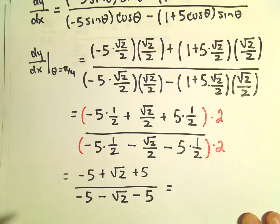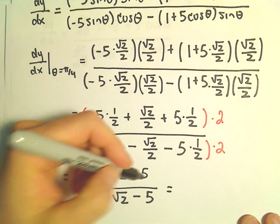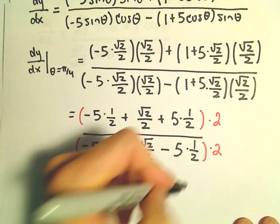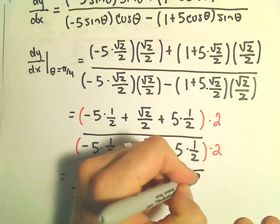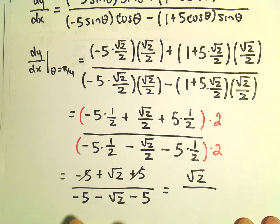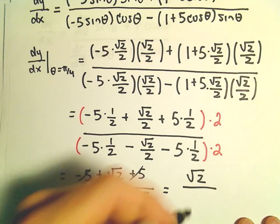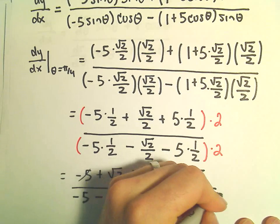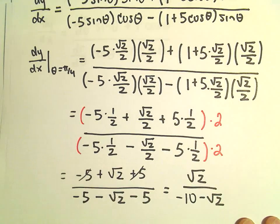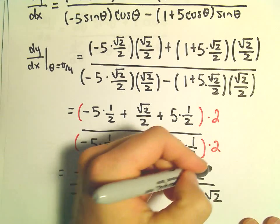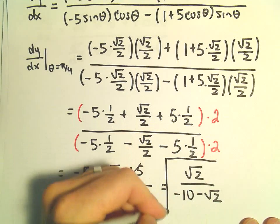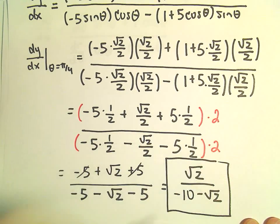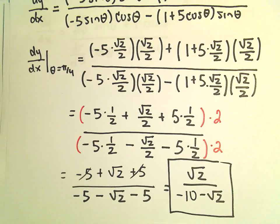In the numerator, the negative 5 and positive 5 cancel, leaving square root of 2. In the denominator we have negative 10 minus square root of 2. That's the value for the slope of our tangent line.